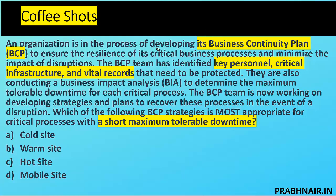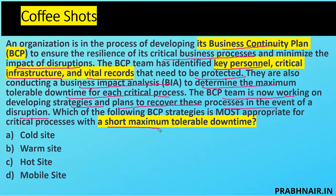Next question on BCP: an organization is developing a Business Continuity Plan to ensure resilience of its critical business processes. The BCP team has identified key people, critical infrastructure, and vital records to protect, and is conducting a BIA to determine the Maximum Tolerable Downtime (MTD) for each business process. The team is now developing strategies to recover processes in the event of disruption. The question asks which BCP strategy is most appropriate for a critical process with a short MTD.